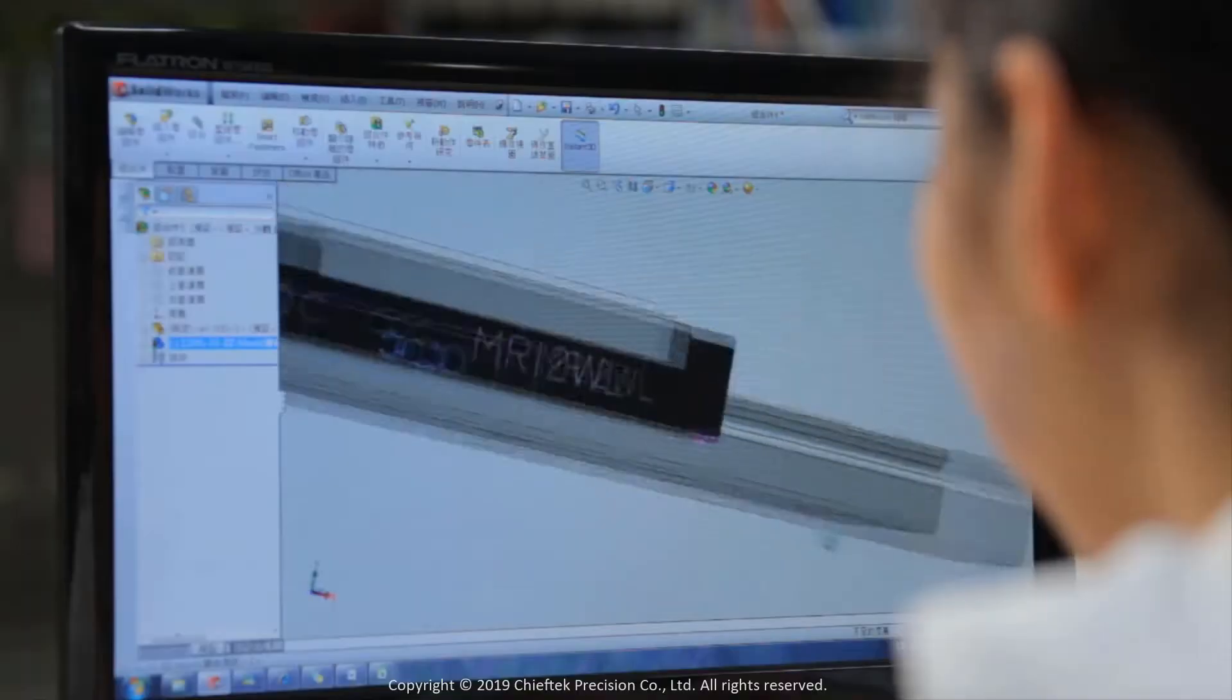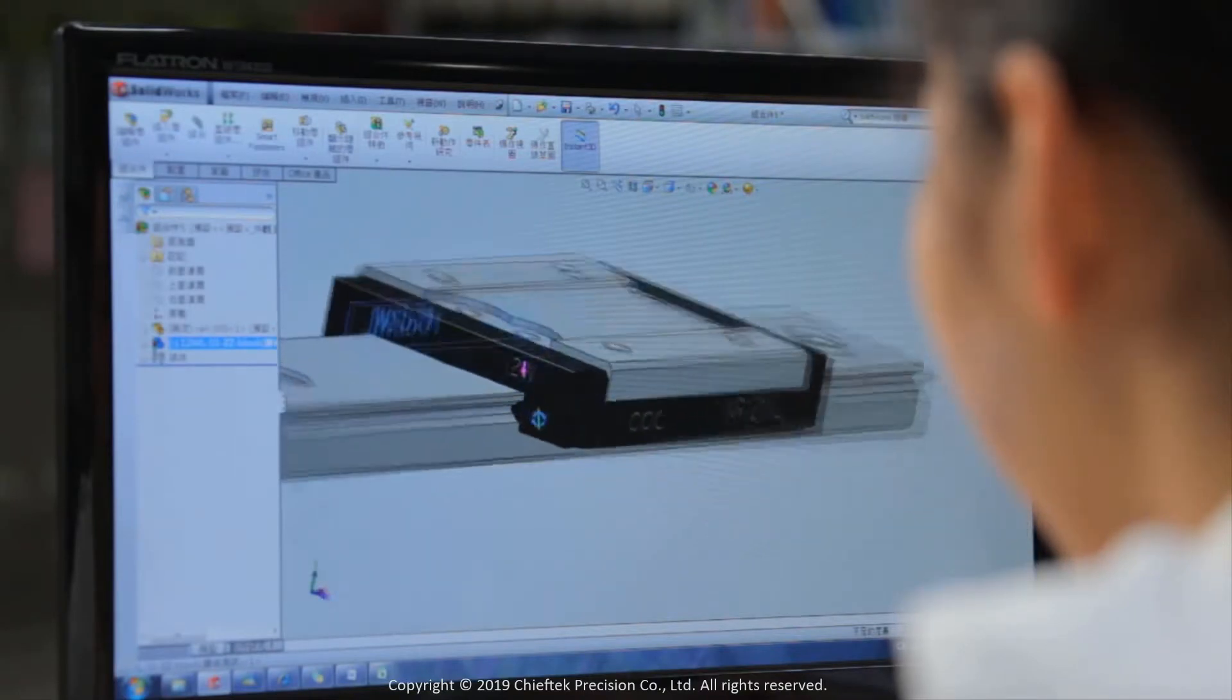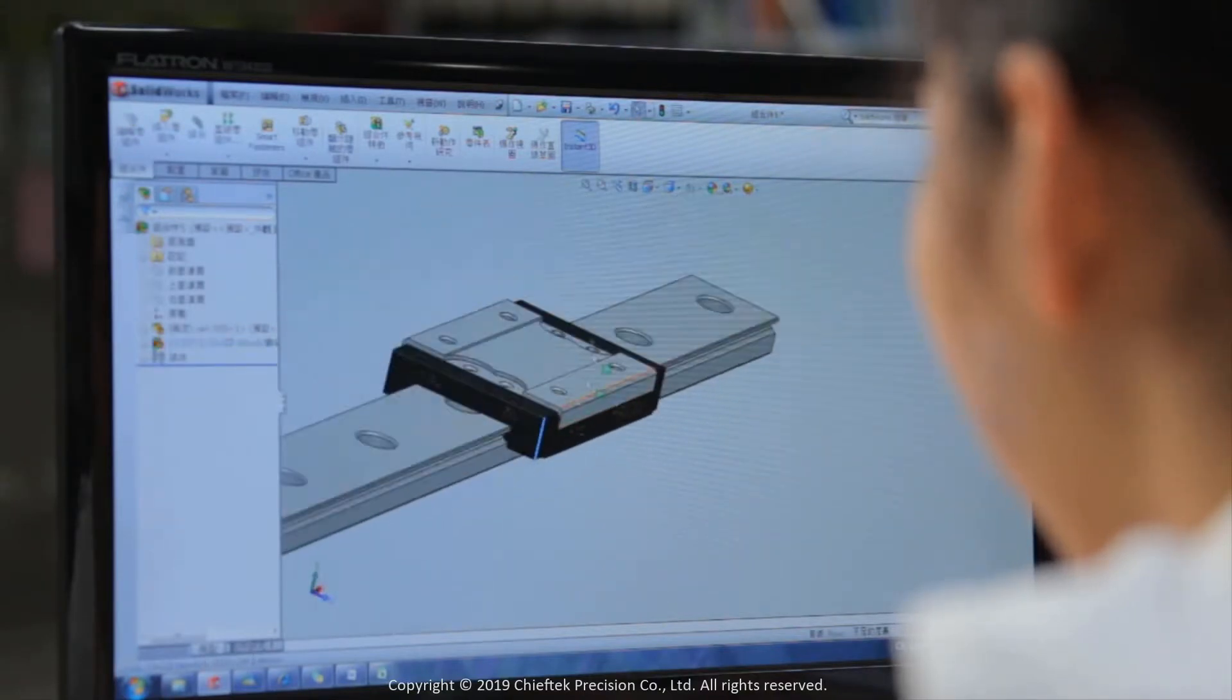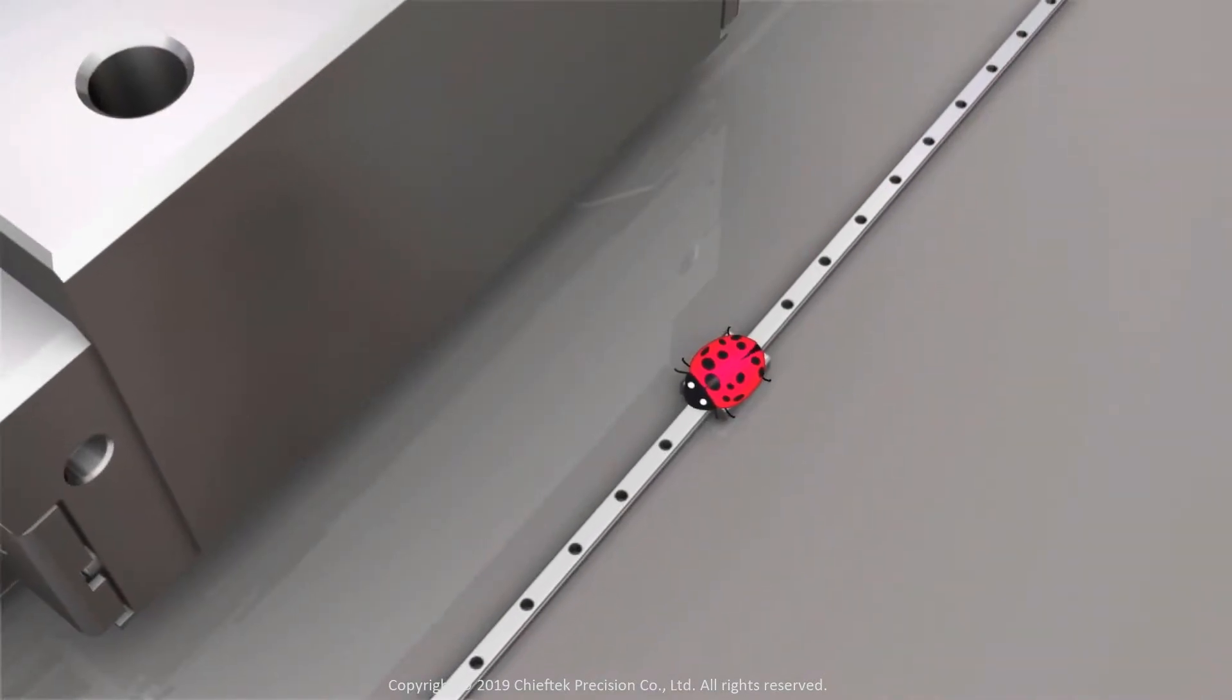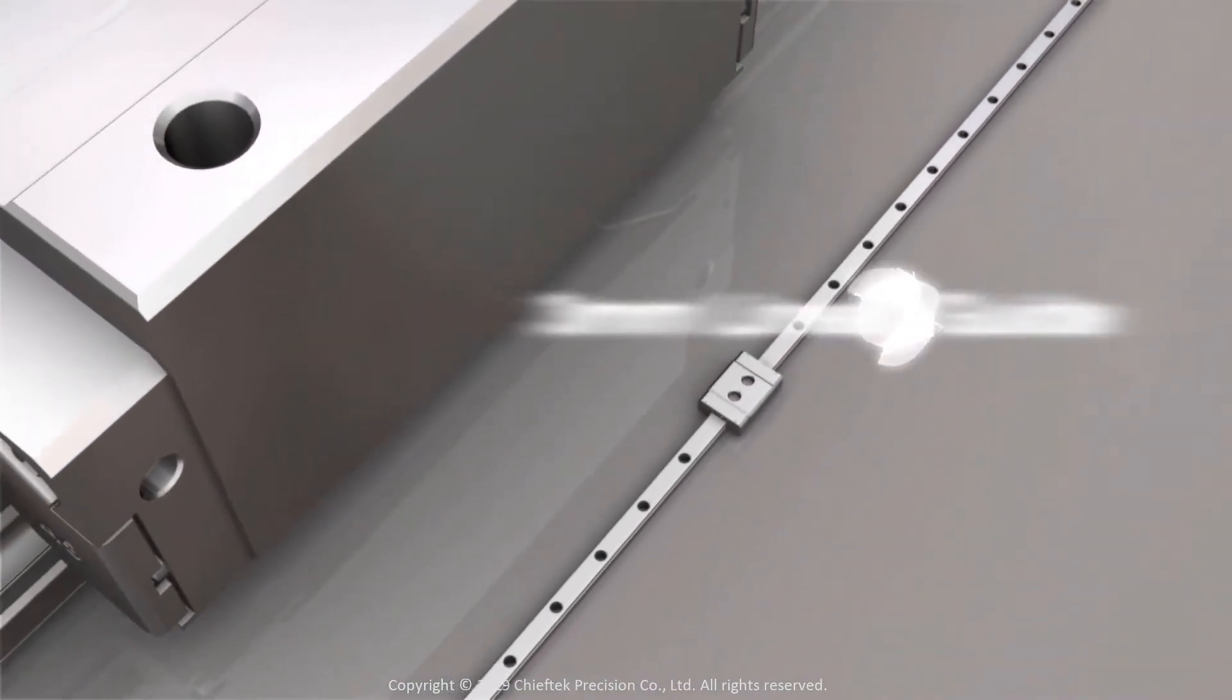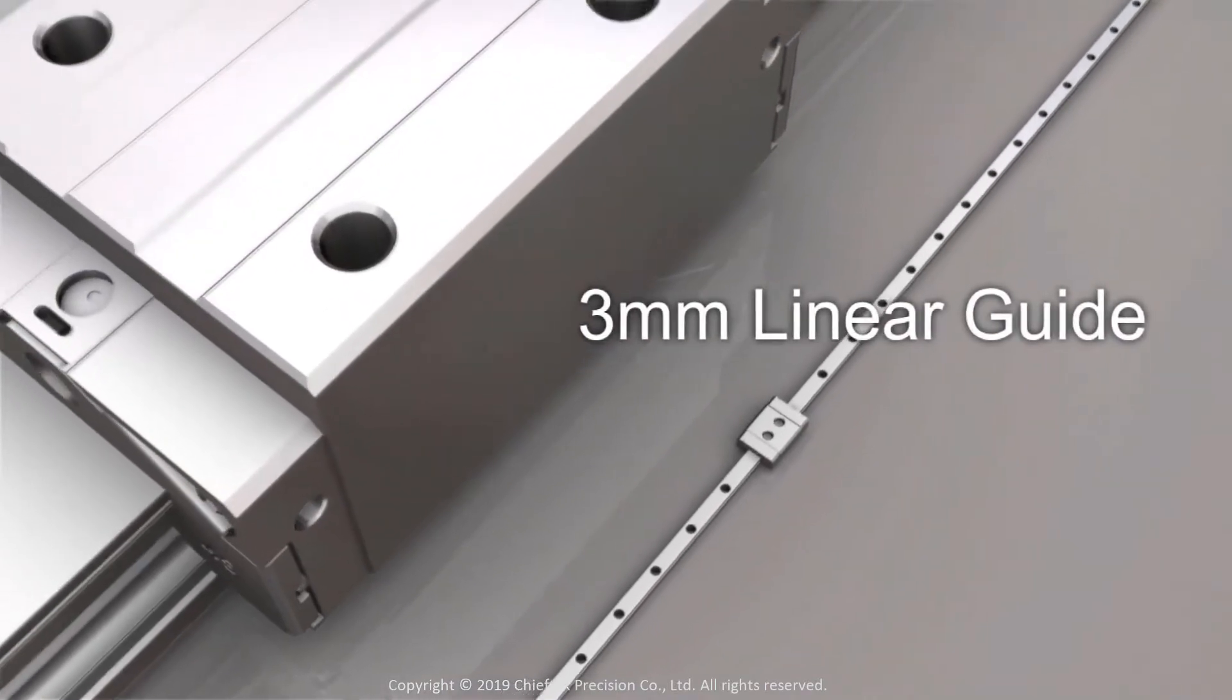Continuous innovation is the key driving force behind progress at Chief Tech. In 2004, Chief Tech successfully mass-produced the world's first 3mm miniature linear guide using its own unique production technology.